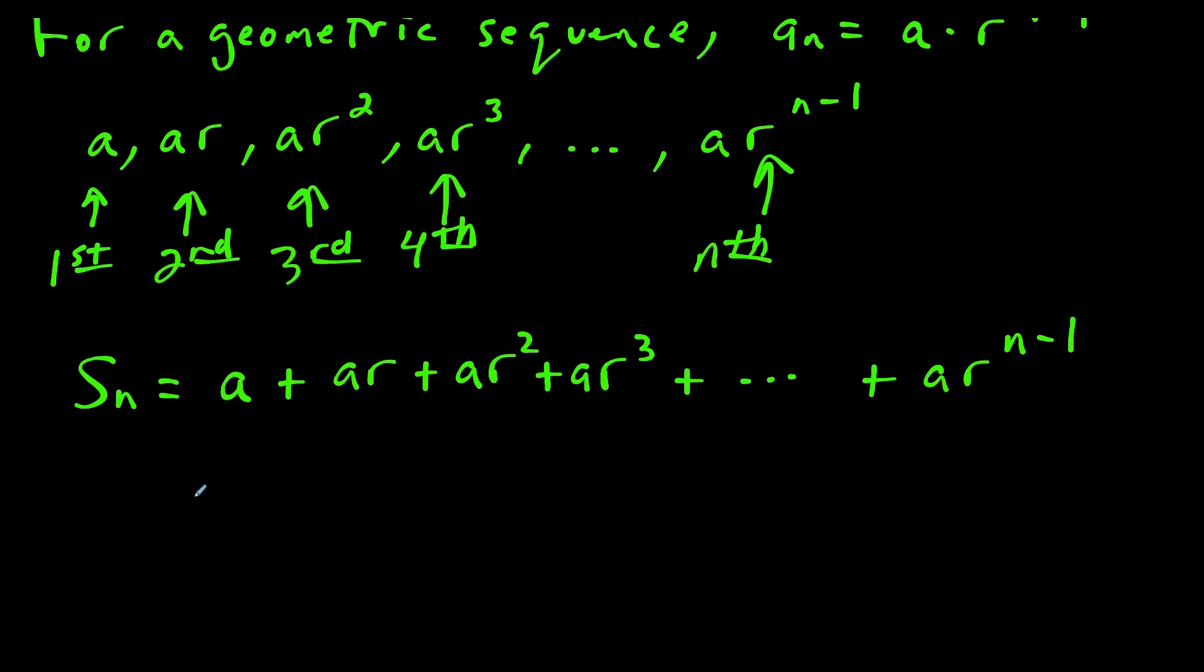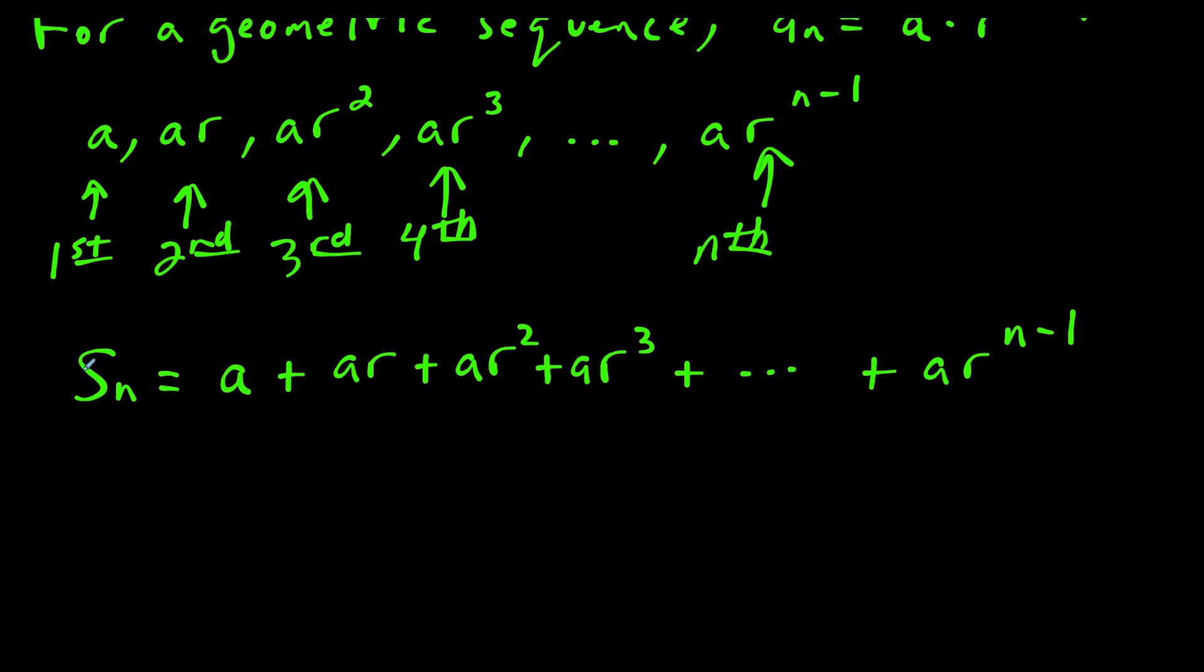So to come up with the formula, what we want to do is multiply everything here by r. So we're taking s sub n and multiplying everything by r. So the first term now would be a times r, plus the second term would be ar squared, and then the third term would be ar to the third. And you can see when we multiply by r, all the powers of r just increase by 1.